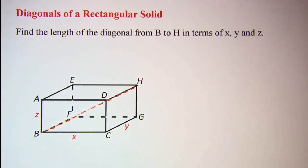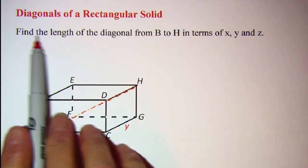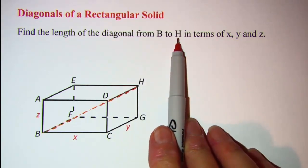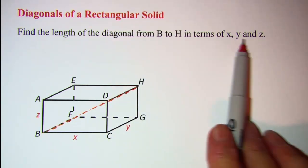In this video we'll be looking at diagonals of a rectangular solid. Our problem is to find the length of the diagonal from point B to point H in terms of x, y, and z.